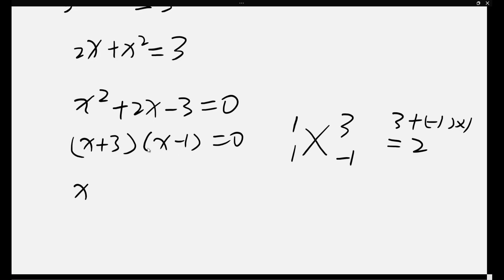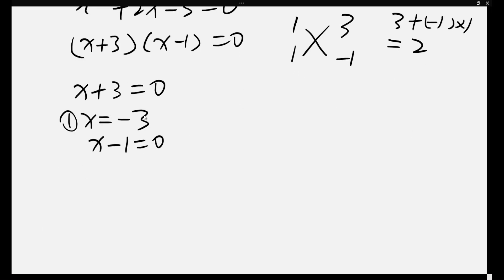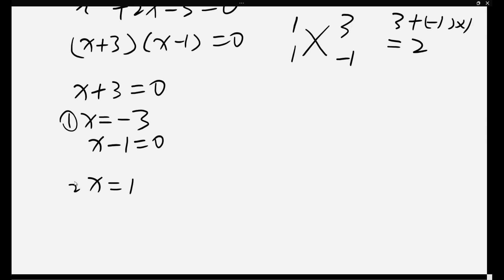From x plus 3 equals 0, we get x equals negative 3. This is the first solution. From x minus 1 equals 0, we get x equals 1. This is the second solution.